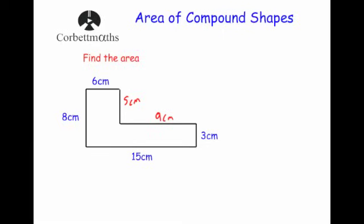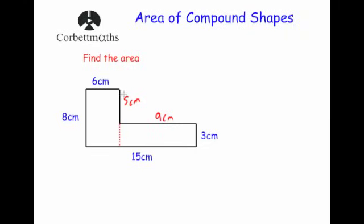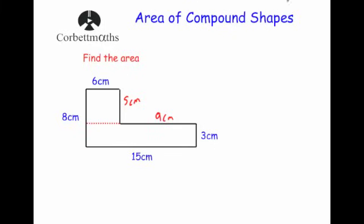With the missing sides labelled, we're going to split the shape. We could split it vertically or horizontally — it doesn't matter, because if you find the area of each part and add them together you'll get the same total overall.